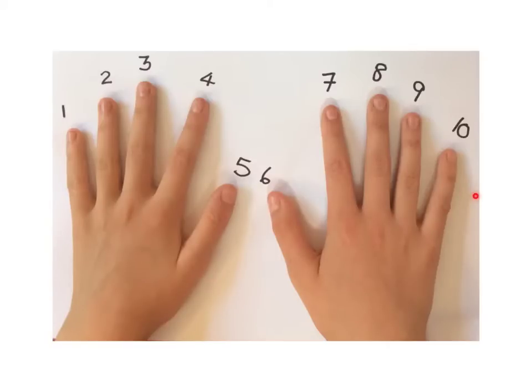Then if you want to calculate 3 multiplied by 9, what you do is you count finger number 1, 2, 3 and you bend that one down like this.